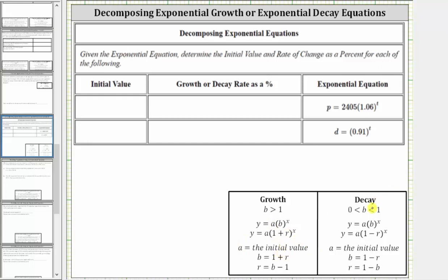If the base b is between zero and one, we have exponential decay, and the base b is equal to one minus r, where r is the decay rate as a decimal. And if we set b equal to one minus r and solve for r, we have r equals one minus b when we have exponential decay. And the value of a is equal to the initial or starting value.